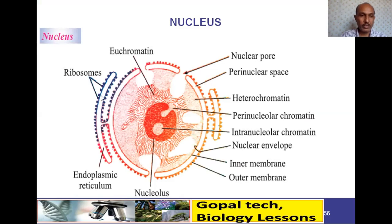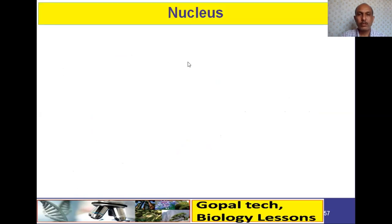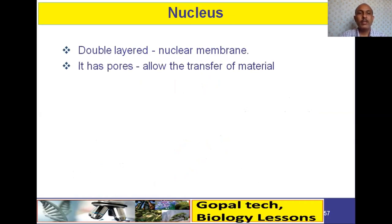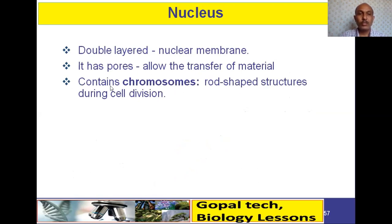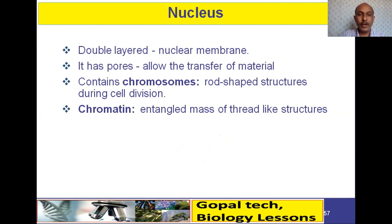From the outer membrane, the endoplasmic reticulum also develops — it may contain ribosomes or be without ribosomes. The nuclear membrane has pores which allow the transfer of materials in and out. The nucleus contains chromosomes, which are rod-shaped structures generally found during cell division.